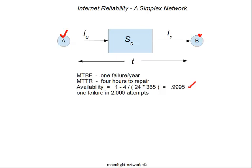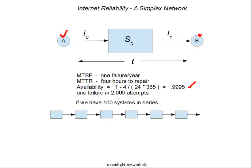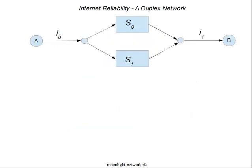That's not a bad number — one failure in 2,000 attempts. However, recall that we have a hundred of these systems in series. Traceroute shows that 30 hops is not unusual, and including the layer 2 and optical systems we probably have a hundred systems in total. If we do that computation, our failure rate jumps to 1 in 20, which is not acceptable — meaning we could not reach sites one time in 20 when we try, and that site would be unavailable for two hours on average. So we have to find a way to overcome system failures in real networks.